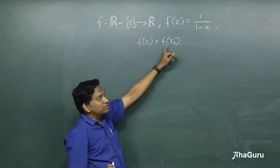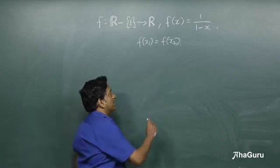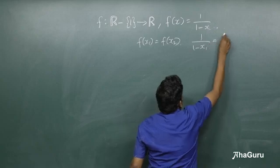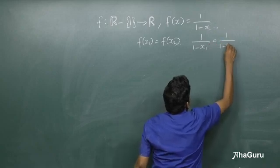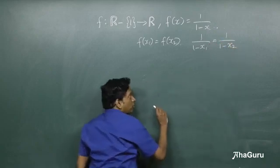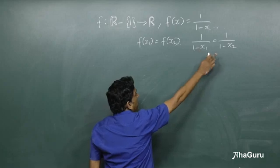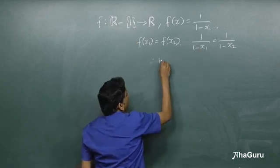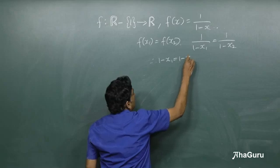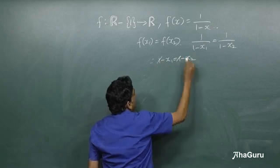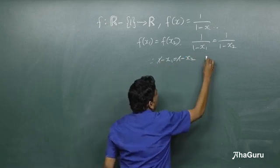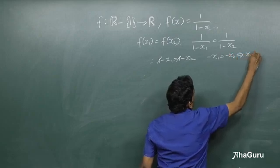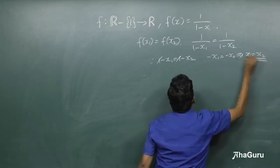Now let's apply the condition f(x₁) = f(x₂) and see what happens. We get 1/(1-x₁) = 1/(1-x₂). Since neither x₁ nor x₂ can equal 1 (as 1 is not in the domain), we can cross-multiply and cancel the 1, giving us -x₁ = -x₂, which implies x₁ = x₂.